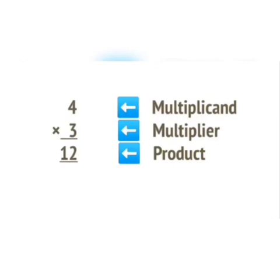Now let us understand some terms of multiplication. In 4 into 3 is equal to 12: the first number 4, which is the number being multiplied, is known as the multiplicand. The number 3, by which it is multiplied, is known as the multiplier. And finally, the answer we get, 12, is the product. Remember these terms when you do multiplication.